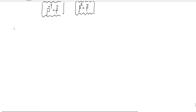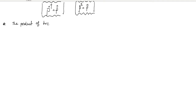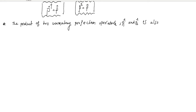Properties of projectors: Property one — the product of two commuting projection operators P₁ and P₂ is also a projection operator. It is better to state this clearly: the product of two commuting projection operators, for example P₁ and P₂, is also a projection operator.